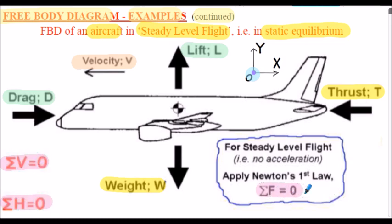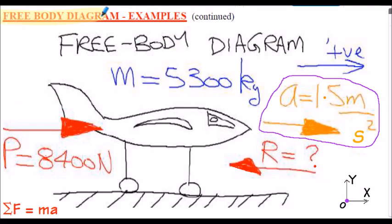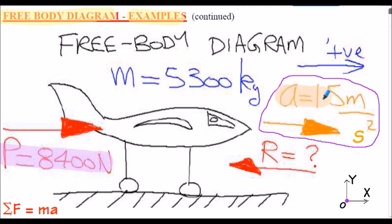Here's a free-body diagram of an aircraft accelerating across the runway — an example considered in a previous presentation related to Newton's laws of motion. In this case we have an applied force P from the thrust of the engines, we're informed the aircraft is accelerating at 1.5 metres per second squared, and the question wants us to find the resistance to motion using Newton's second law. Our inertial axes are stated here showing the positive directions.